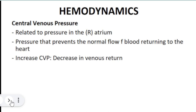Central venous pressure (CVP) is the pressure found in the right atrium — the recipient of deoxygenated blood from the body. A high CVP can prevent normal blood flow returning to the right atrium. Therefore, an increase in CVP leads to a decrease in venous return, because the elevated pressure inside the right atrium prevents blood from entering.